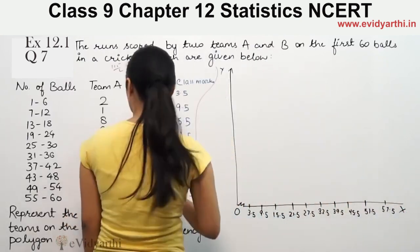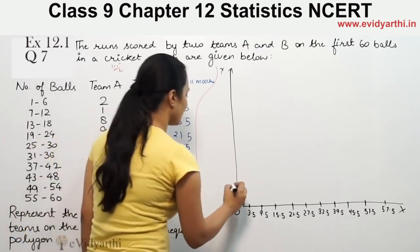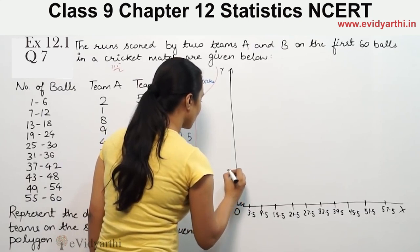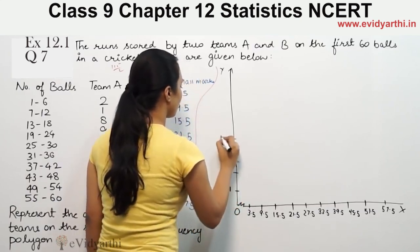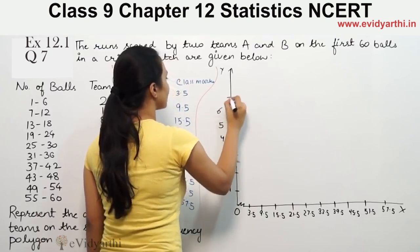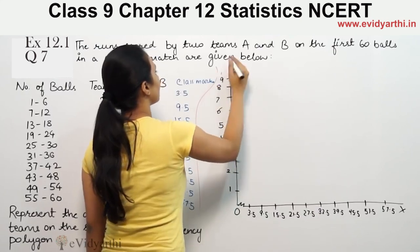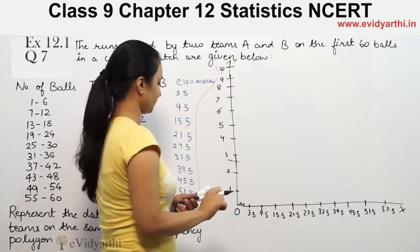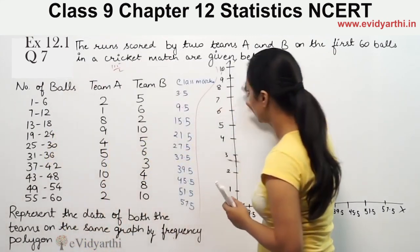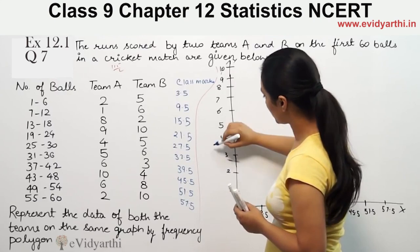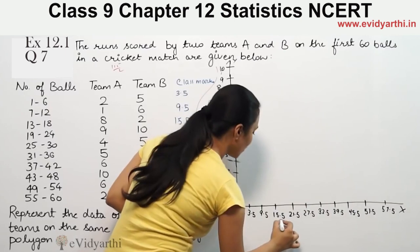On the y-axis we mark from 1 through 10. The y-axis represents the scores and the x-axis represents the number of balls. Now we will plot the points for both teams.